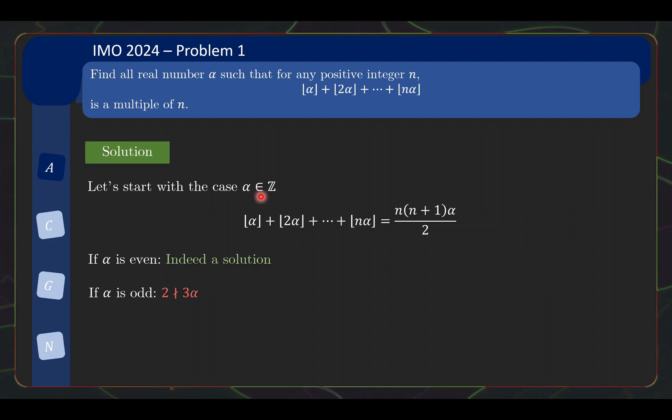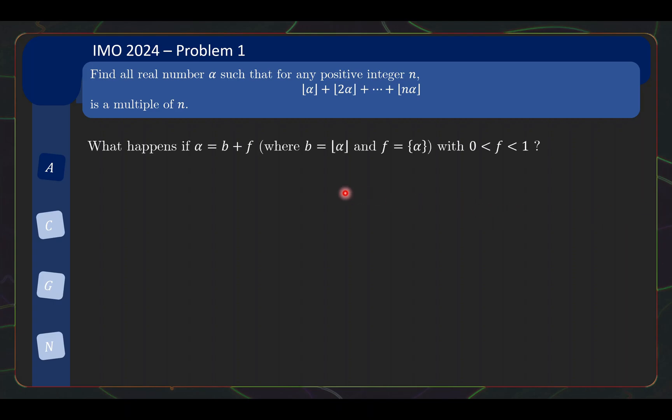Okay, so having dealt with the easy case, what happens if alpha is not an integer? Well, we want to make use of what we have already learned from the integer case. So quite naturally, you want to write alpha as its integer part plus its fractional part. So the integer part is just the floor of alpha and the fractional part given by this notation is the left over, which in this case is strictly between 0 and 1.